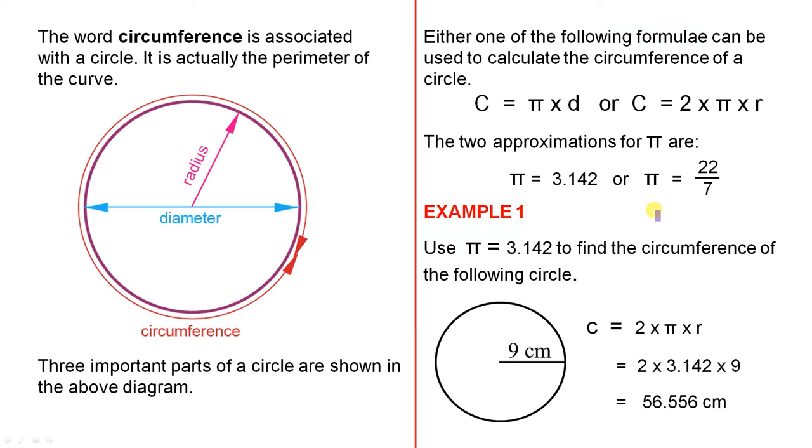Let's do some examples to see how pi is used. Use pi equals 3.142 to find the circumference of the following circle. We're given that the radius is 9, there it is there, and we've already been told that pi is 3.142. We can use C equals 2 times pi times r, which is that formula there. It'll be 2 times 3.142 times 9, and you can use a calculator to work this out, or you can do it any other way, and you'll find that the circumference is 56.556 centimetres.